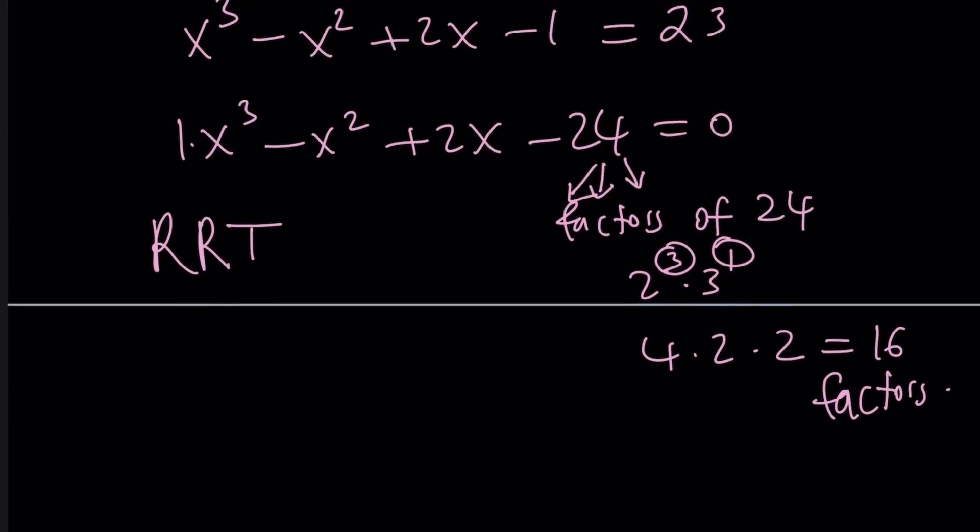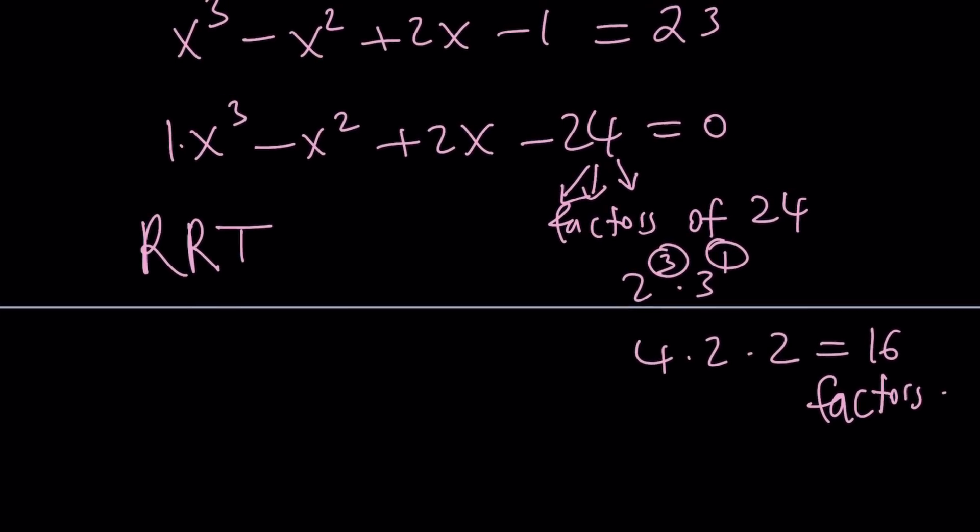The leading coefficient is 1 in this case, so you don't have to worry about it. That's why I like monic polynomials whose leading coefficients are 1. We only have to focus on factors of 24. 24 has quite a few factors because it can be written as 2³ times 3¹, which tells us there's going to be 16 factors in total. Good luck with that. You're basically going to have to check, and if you're lucky, you're going to get it maybe 1st, 2nd, 3rd trial.